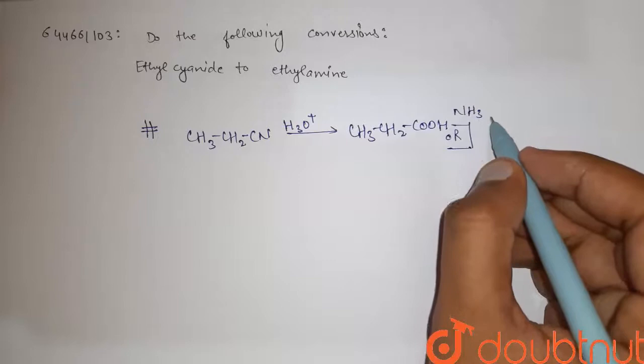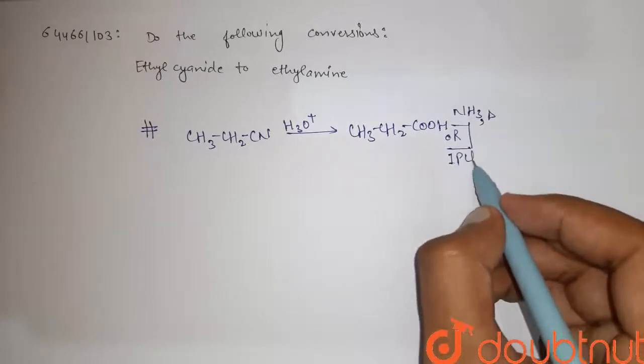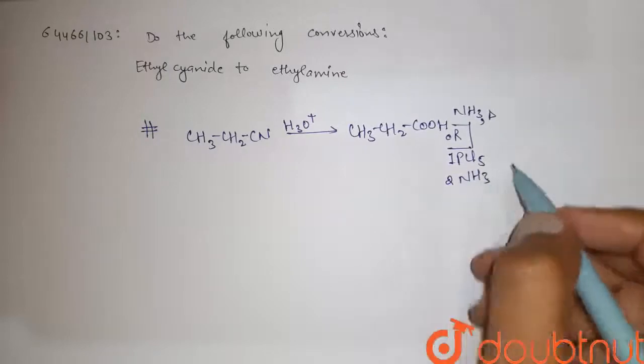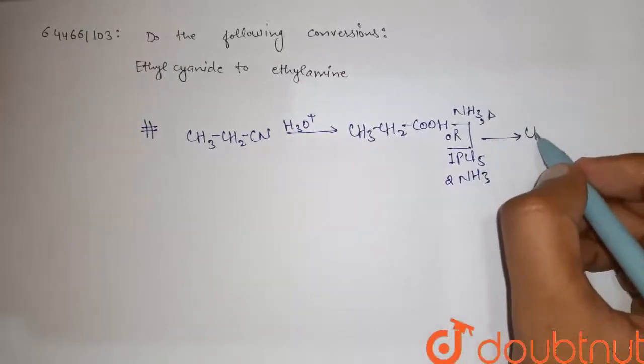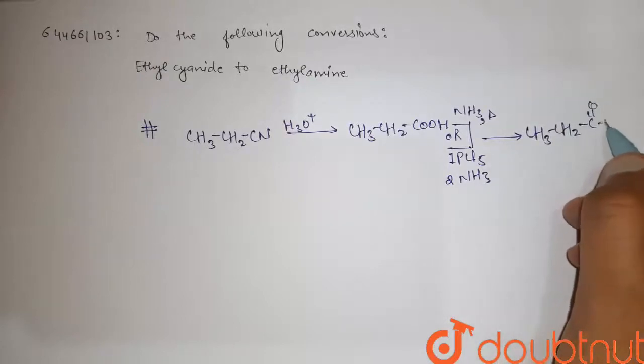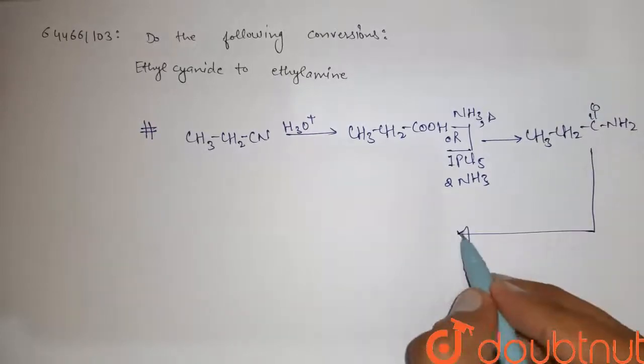We can use NH3 and heat, or alternatively: step 1, PCl5, then step 2, NH3. Here we get CH3-CH2-CONH2.